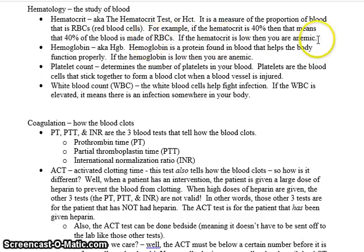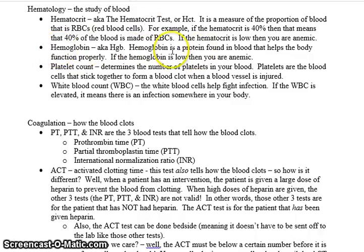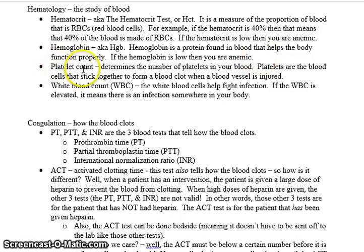Then there is hemoglobin. The hematocrit is a test; hemoglobin is an actual protein found in the blood that helps the body function properly. If the hemoglobin is low, again you are considered anemic.